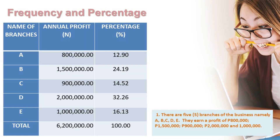How to compute: since the total is the base, it is the denominator. $800,000 divided by $6,200,000 gives 12.9% for A. $1,500,000 divided by $6,200,000 gives 24.19% for B. $900,000 divided by $6,200,000 gives 14.52% for C. $2,000,000 divided by $6,200,000 gives 32.26% for D. And $1,000,000 divided by $6,200,000 gives 16.13% for E. Totaling all percentages should equal 100%. This is the sample table when producing your frequency and percentage.